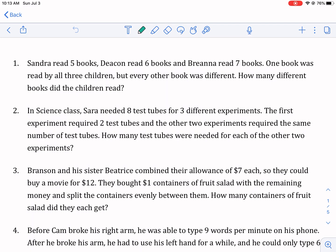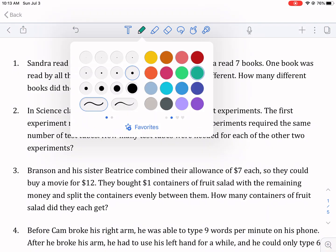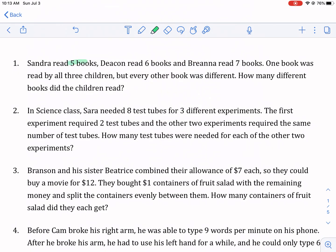So Sandra read five books. I'm just going to underline the key features here. Sandra read five books, Deacon read six books, Brianna read seven books. One book was read by all three children, but every other book was different. How many different books did the children read? So we're looking at the variety here.